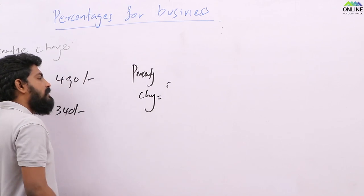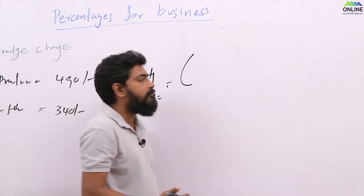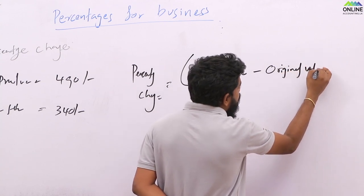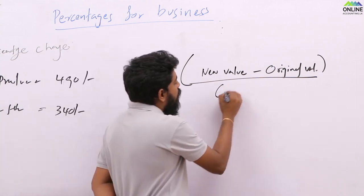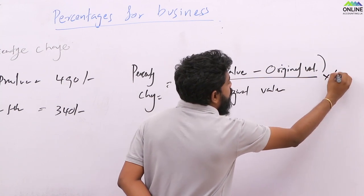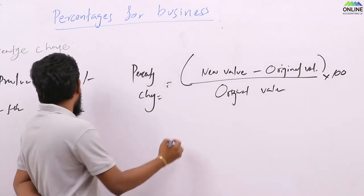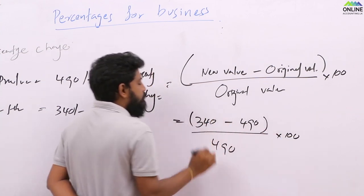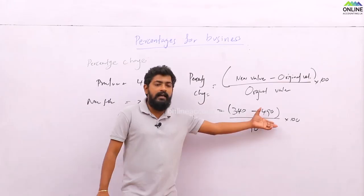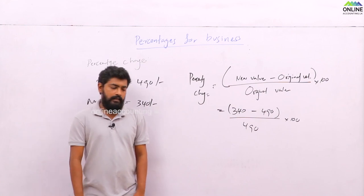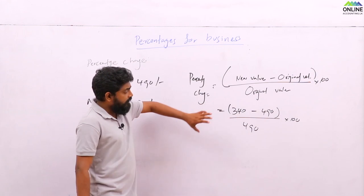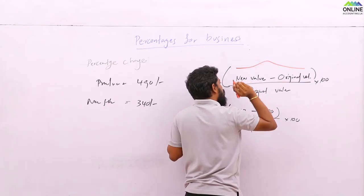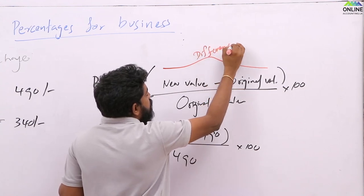Percentage change is calculated like this: new value minus original value, divided by original value, into 100. For example, we can't subtract 490 from 340, so we take the difference of the two values — difference means you subtract the smallest one from the largest one.